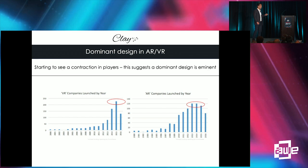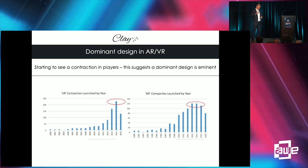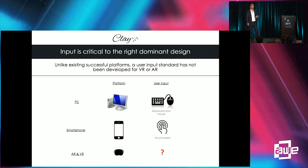Here's some research I did — it's a few years old but still relevant — tracking the number of AR and VR companies launched per year. Back to the framework: when you start to peak at that number, typically that's when a dominant design should have already emerged. I think we're close, but I don't think we're there yet.